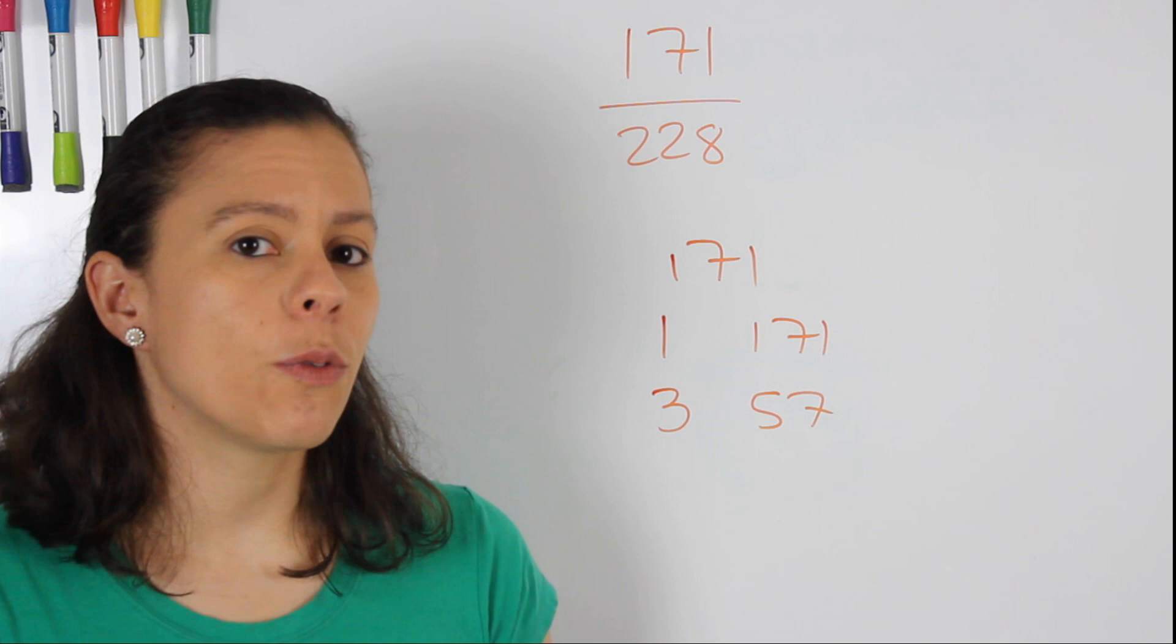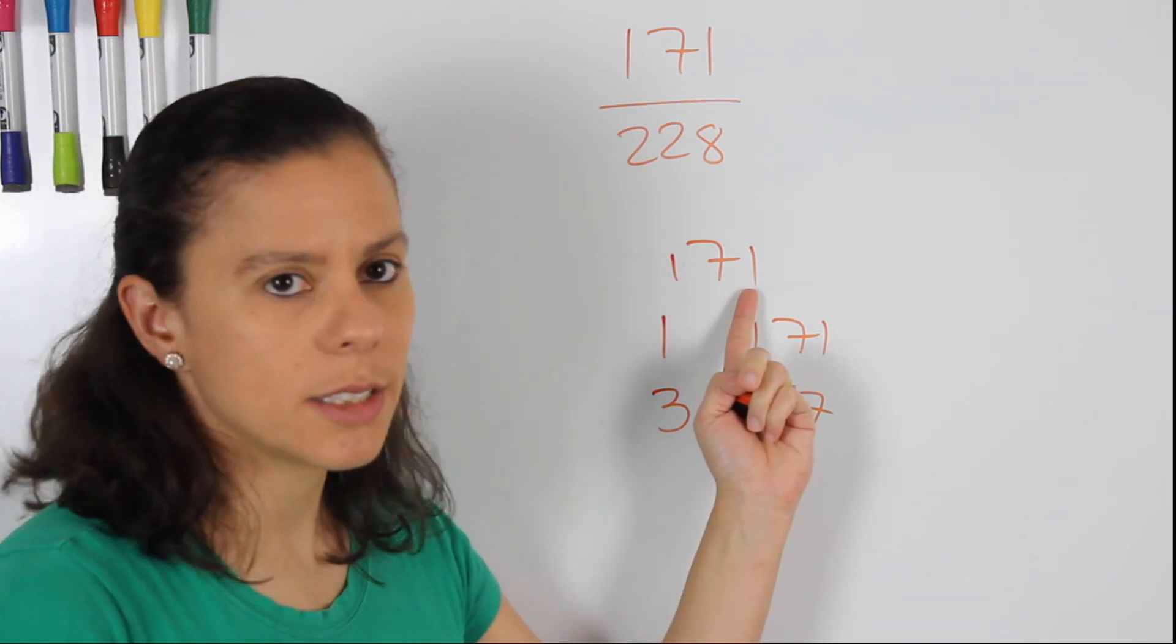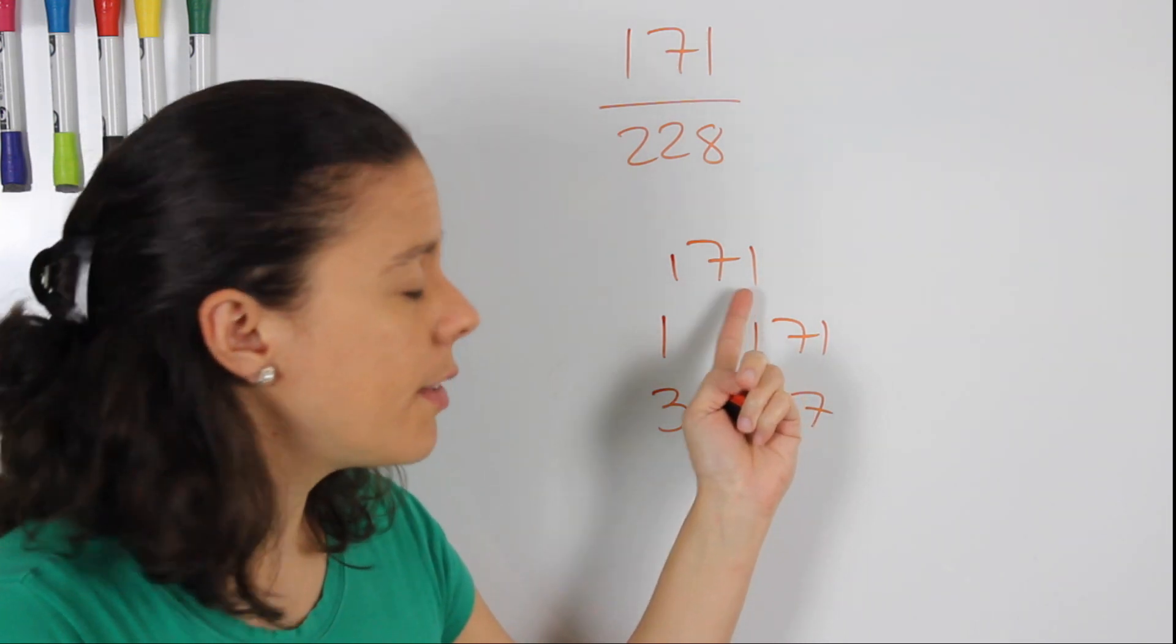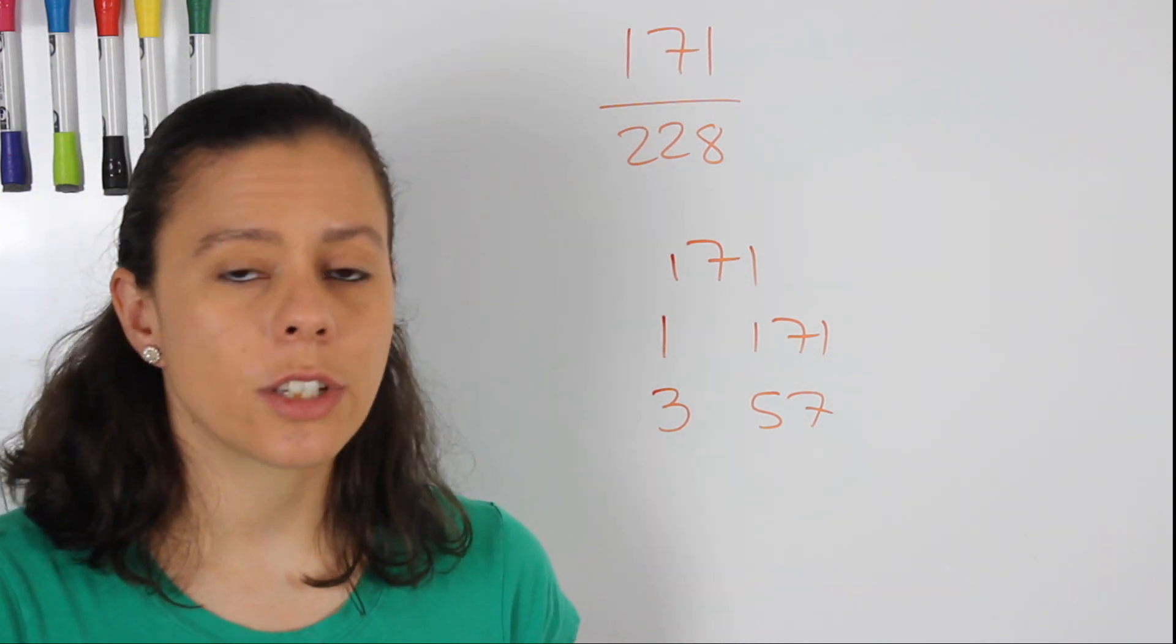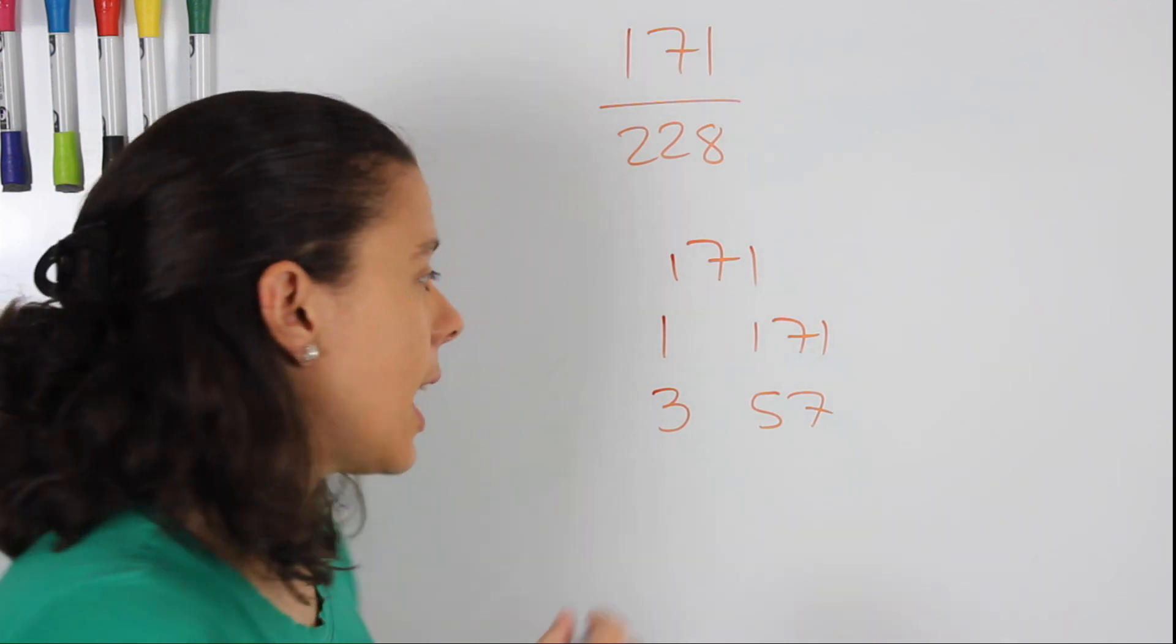We go to 5. We know that 5 is not going to be a factor because this does not end in 0 or 5. We go to 7. We check on the calculator. We see it is not a factor. We go to 9 and we see that it is 9 and 19.